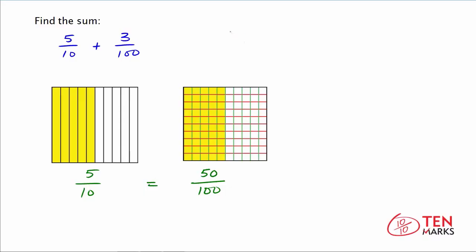So now let's rewrite our addition sentence as 50 one hundredths, because that's equivalent to 5 tenths, plus 3 one hundredths.